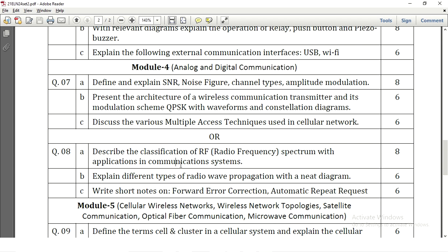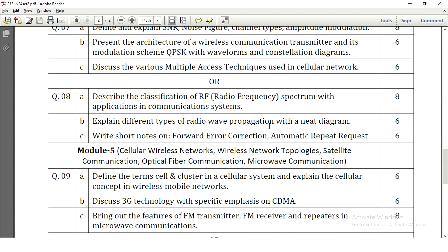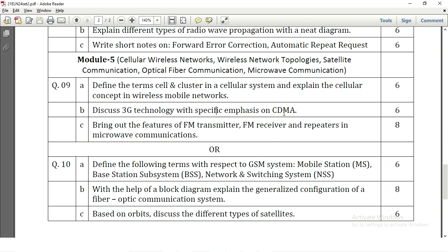And then describe the classification of RF spectrum with applications in communication system. So here we need to write the classification of radio frequency spectrum. Need to be written neatly and brief explanation for each everything need to be written for 8 marks. Explain different types of radio wave propagation with neat diagram. This is a block diagram that carry 3 to 4 marks and expansion will be for 3 to 4 marks. Write a short note on forward error correction and automatic repeat request. These two scenarios or concepts need to be explained for 3 marks in brief. Define the term cell and cluster in a cellular system. Explain the concept in wireless mobile networks. So with respect to mobile networks are concerned what is a cell and for what we call it as a cluster in a cellular system need to be explained for 6 marks that is 3 plus 3 again. Discuss 3G technology with specific emphasis on CDMA. Here we need to explain CDMA that is how the 3G technology will be using CDMA and what are all the uses like that.